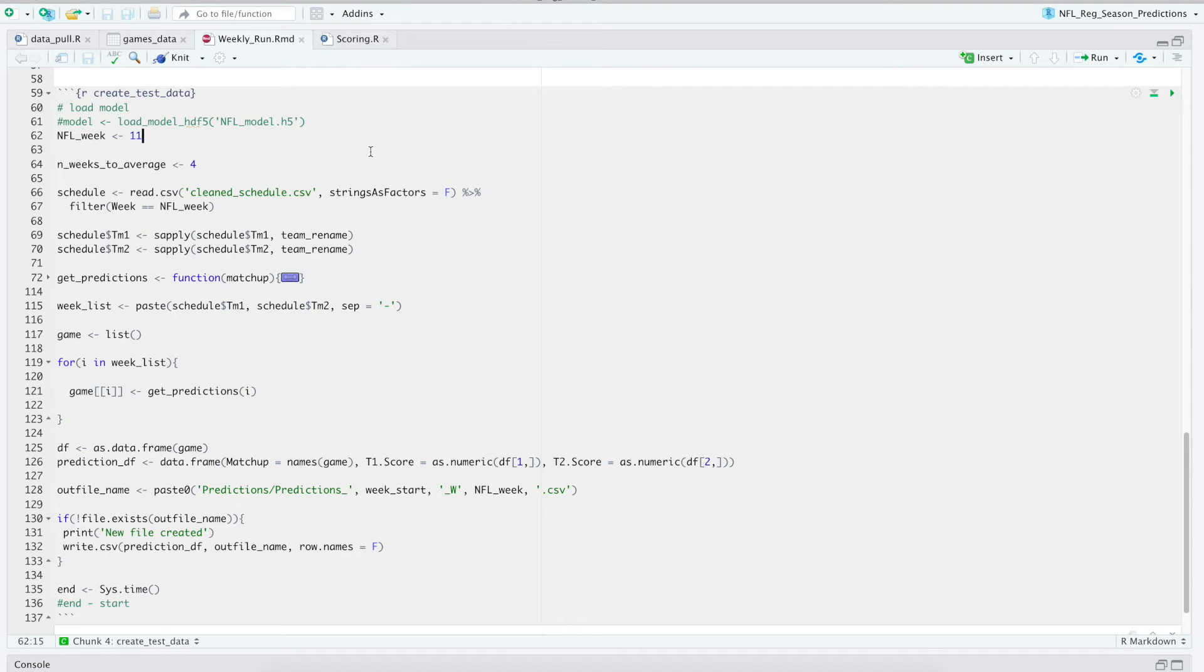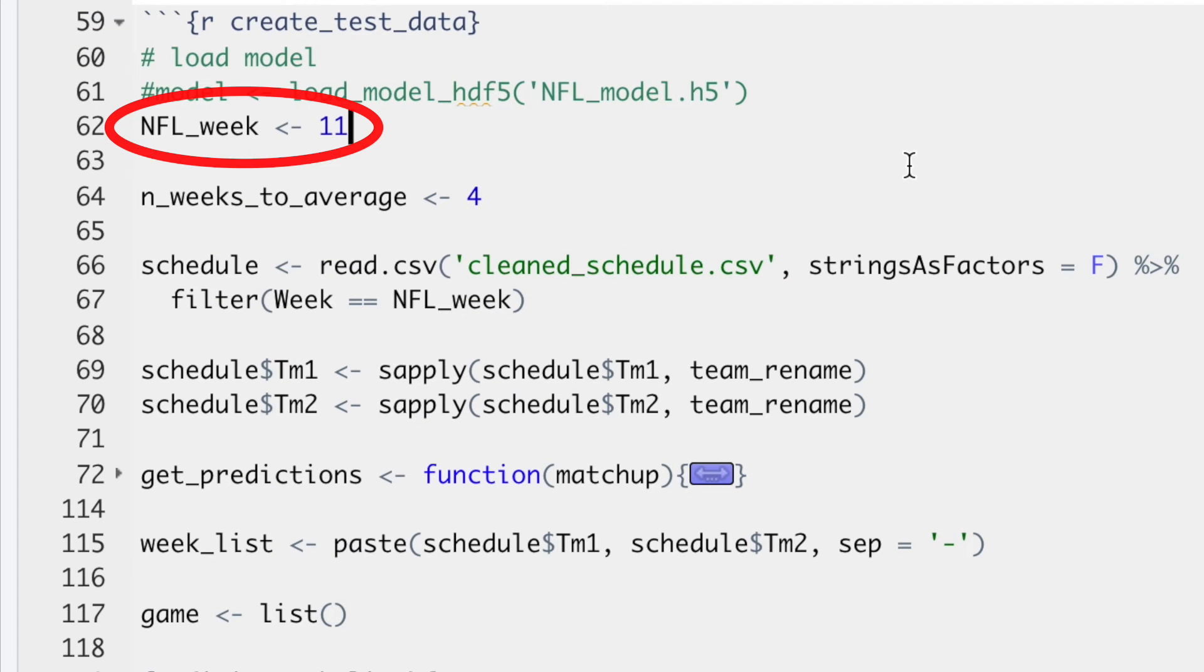And now is finally time to make some predictions. Since we're going to be creating a head-to-head matchup prediction, we're going to take the average of the past few weeks of statistics to be used as the inputs for the model. So since we're predicting week 11, we're using four weeks to average. Each team will be using weeks seven, eight, nine, and ten for their statistics, and if they had a bye week for one of those weeks, then week six will be used.